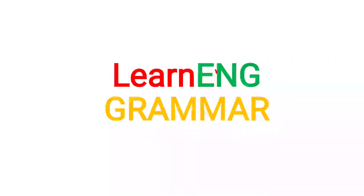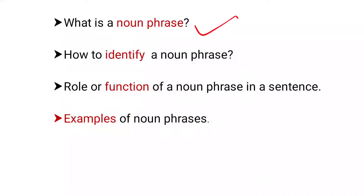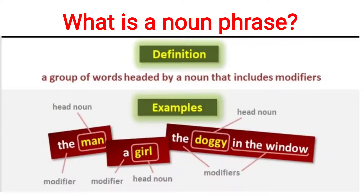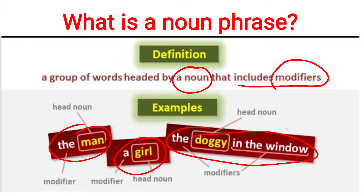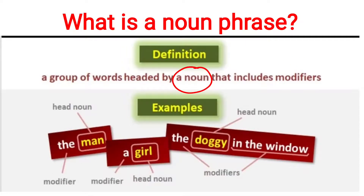Let's start learning grammar. In this video we will learn what is a noun phrase, how to identify a noun phrase within a sentence, the role or function of a noun phrase in a sentence, and some examples of noun phrases. First of all, let's know its definition. A noun phrase is a group of words headed by a noun that includes modifiers. Examples include: the man, a girl, the doggy in the window. In these examples we have head nouns: man,